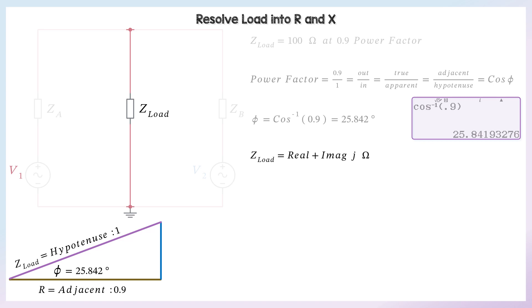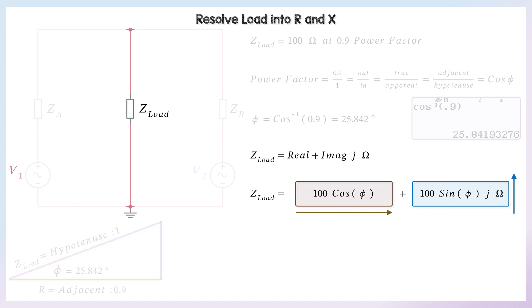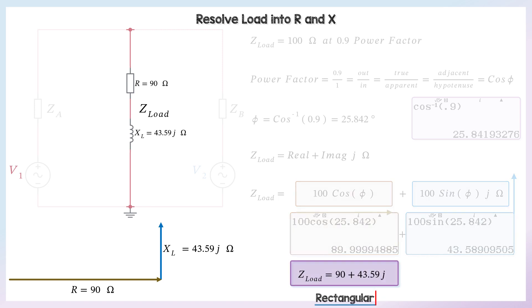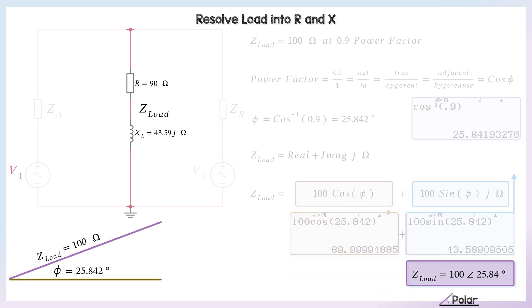So now to resolve into real and imaginary, we could use Pythagoras. But 100 ohms times the cosine of the angle plus 100 times the sine gives us our real and imaginary parts. We knew the real would be 90 ohms if Z was 100 and the power factor was 0.9. So 100 sine theta gives us 43.589 j ohms. So there's the rectangular and polar forms of our load.